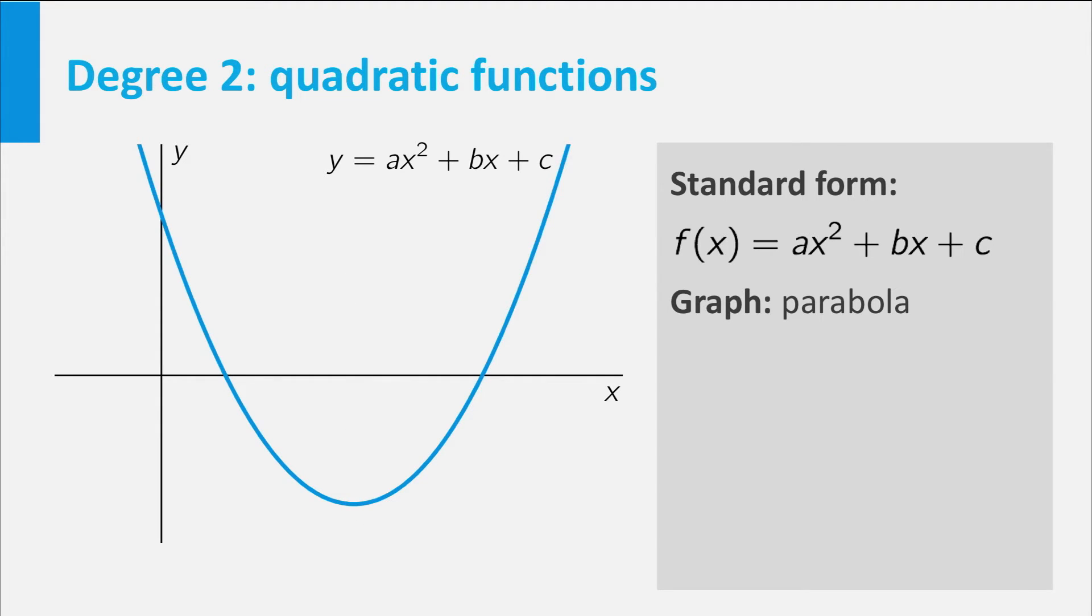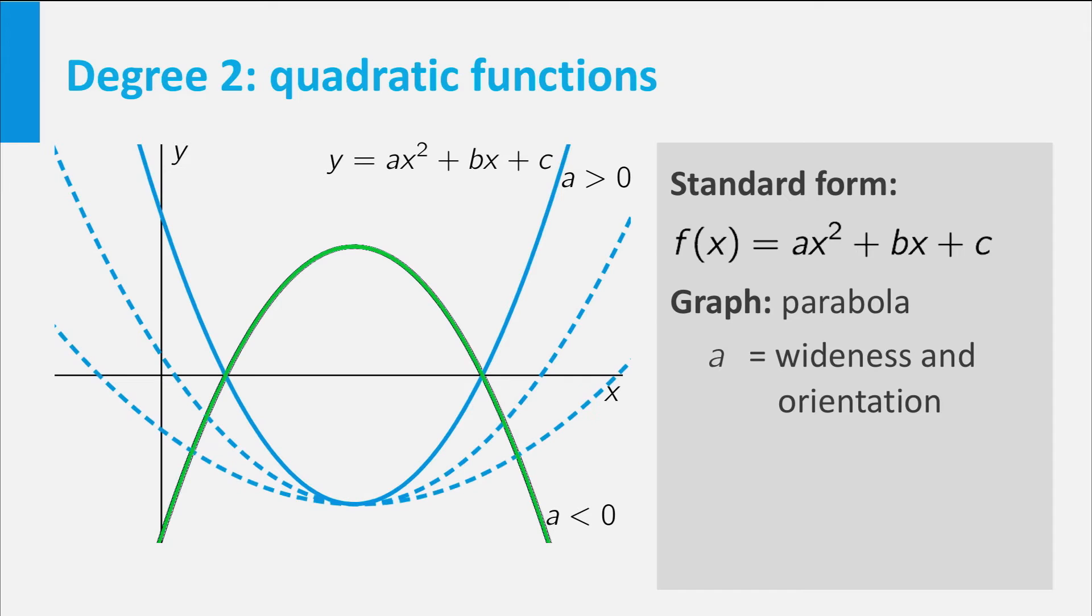The relation between the coefficients a, b and c of the polynomial on the one hand, and the shape of the graph on the other hand, is not as clear as in the case of linear functions. However, we can at least say the following. a is a measure for the wideness and orientation of the parabola. If a is positive, the parabola opens upward. If it is negative, it opens downward. Also, the closer a to zero, the wider the parabola is.